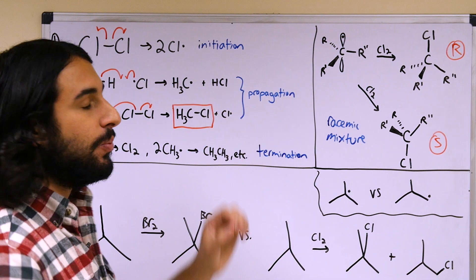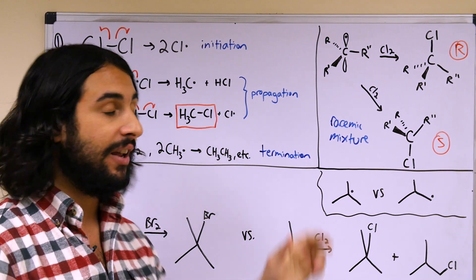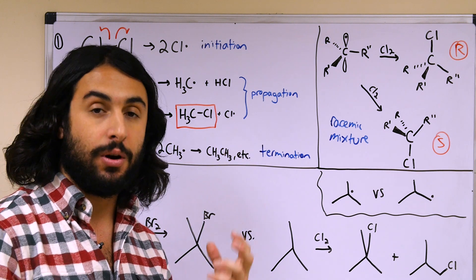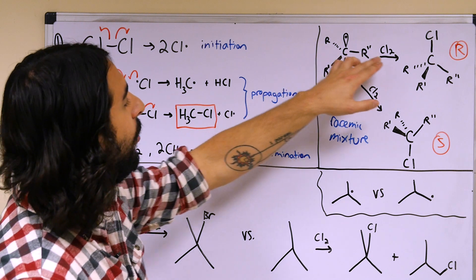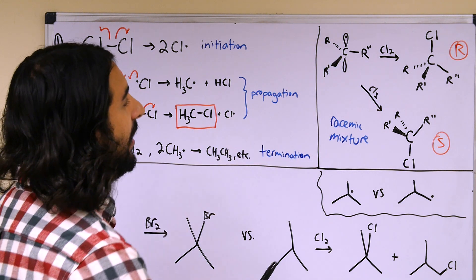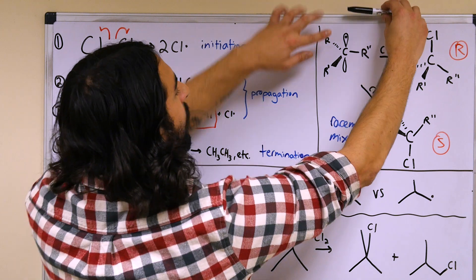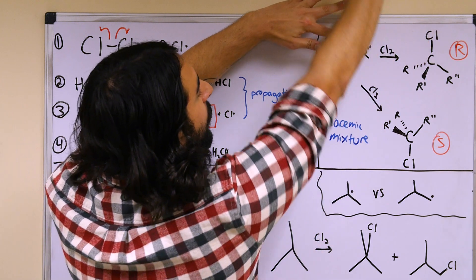That means we have the potential to form a stereocenter if that carbon binds to a new group. Let's say we have a chlorine molecule, and the chlorine molecule is going to approach from the top, then we're going to generate a carbon-chlorine bond. The other chlorine radical will go away, so we have now a new carbon-chlorine bond.